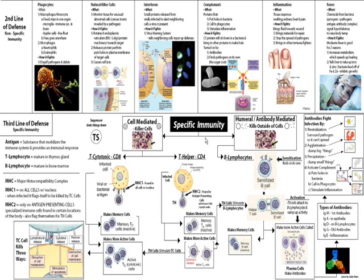Cytokine will stimulate apoptosis, which is programmed cell death — kind of like a self-destruct button. So the TC cell releases chemicals that cause the infected cell to self-destruct. The TC cell also releases perforin, which, just like in natural killer cells, puts holes in the plasma membrane of the target cell and causes cell lysis. Remember that MHC1 is found in all cells of the body, so all cells can basically alert TC cells to come in and carry out this process.